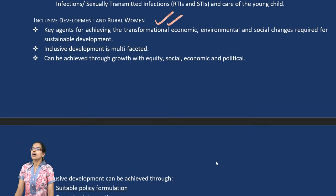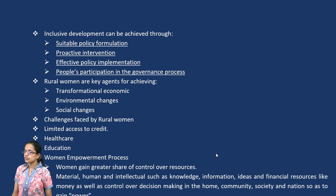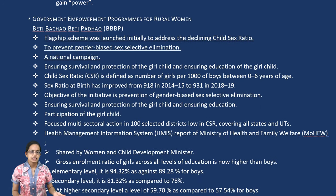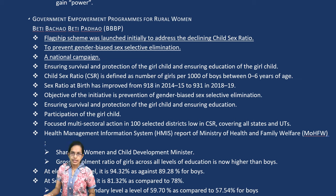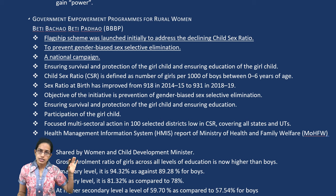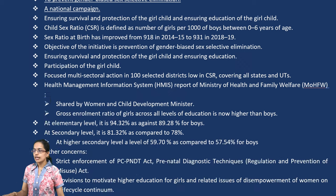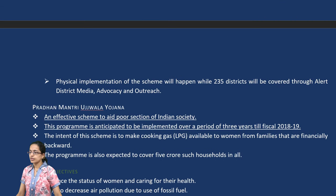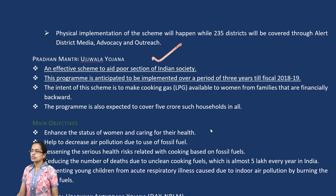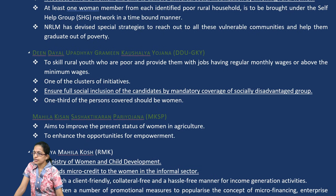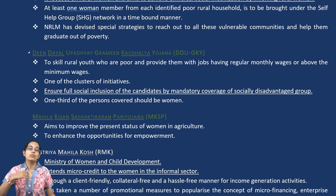For inclusive development, we focus on proactive intervention, policy implementation, and people's participation in governance. Key schemes include Beti Bachao Beti Padhao, which addresses the declining child sex ratio and sex selection. Pradhan Mantri Ujjwala Yojana provides LPG to BPL families. The Deen Dayal Upadhyaya Antyodaya Yojana under the Ministry of Rural Development aims to provide social mobilization for rural women. The Grameen Kaushal Yojana brings more jobs for rural women.